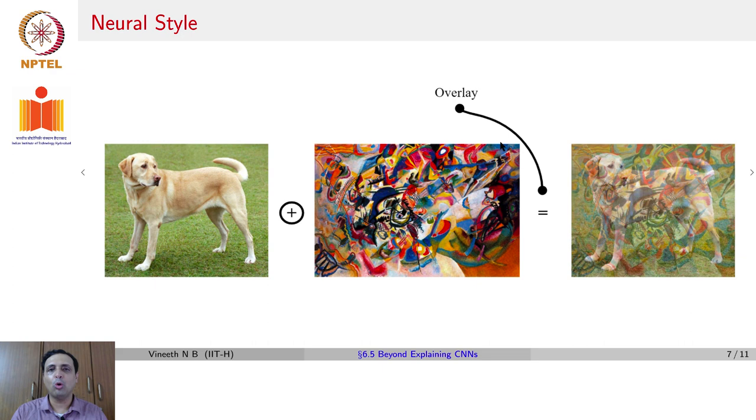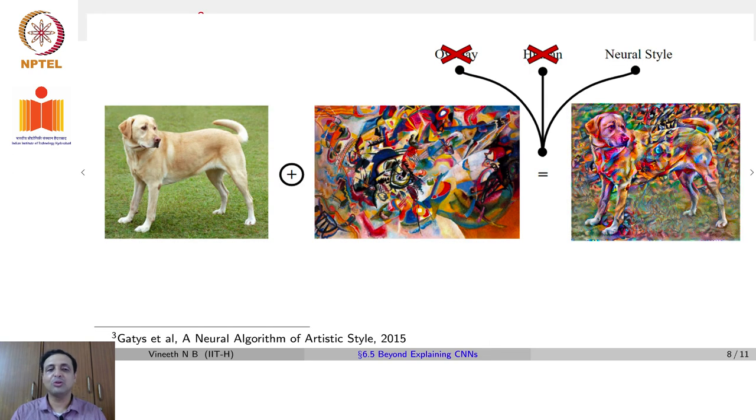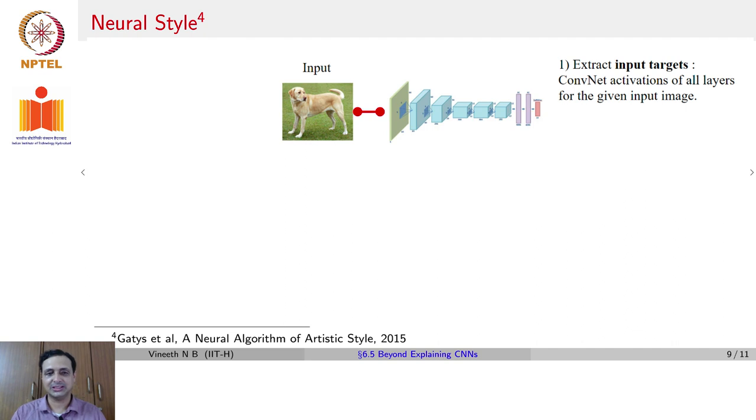One is you could simply overlay, take one of Van Gogh's paintings, overlay that on top of an image that I have. But unfortunately, this really does not give good results. Another option is to ask a human to do it for us. But that is not what we want to go for. The third option, what we are going to look for is what is known as Neural Style Transfer, which was also a method that was proposed in 2015. And let us see how this works.